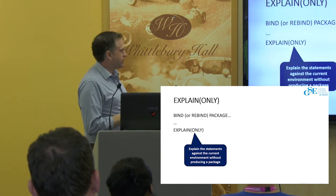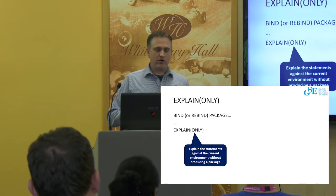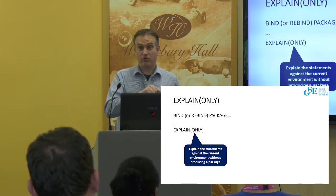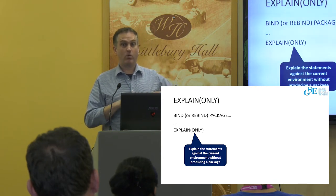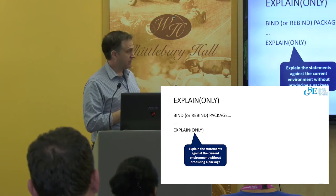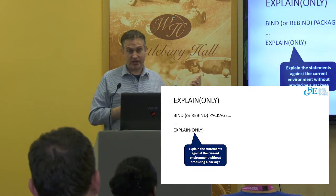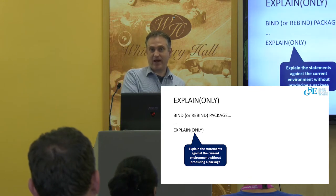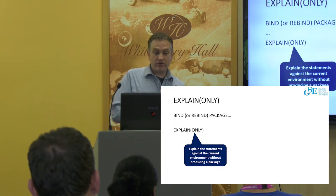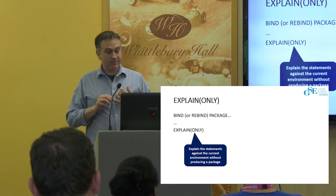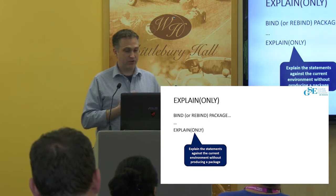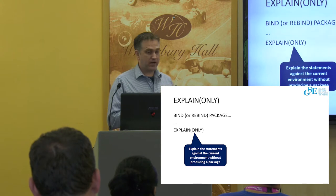If you do an explain package, you're not seeing what the access path would be if you bound it right now — you're seeing what it was when the package was bound. The opposite of that is bind with explain only: I don't want to see the access path in the package right now, I want to see what it would be if I bound it right now. This doesn't produce a package — it just takes the SQL statements in that DBRM or package, explains them, and puts them in your explain tables.